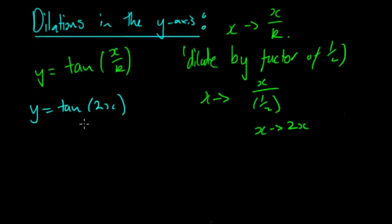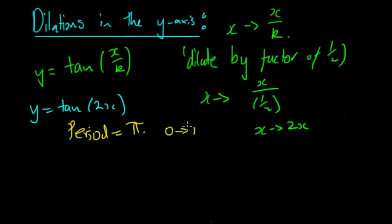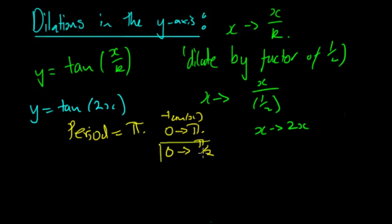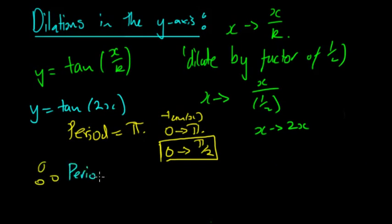What happens to the period? The period before was π, but now with 2x, whatever x value it is gets multiplied by 2. Before we needed to go from 0 to π for tan(x), but now with tan(2x) we only need to go from 0 to π/2, because π/2 times 2 gives us π. Therefore the new period is equal to π/2.